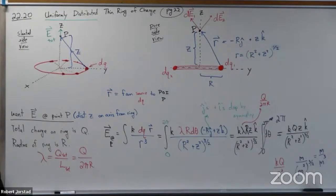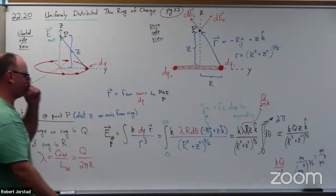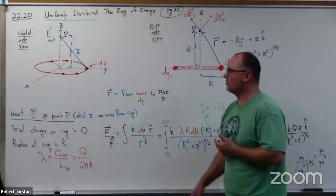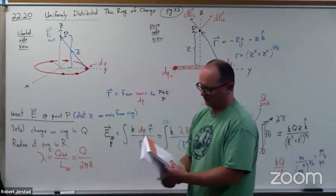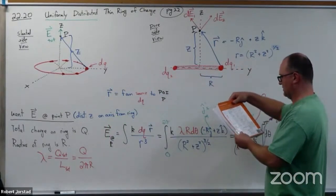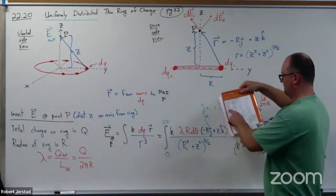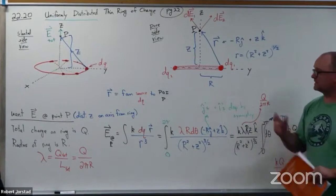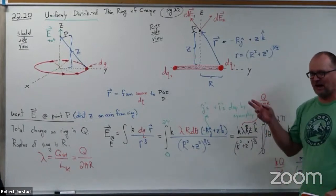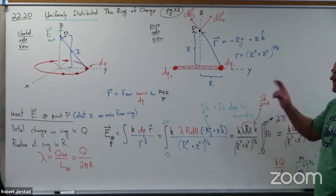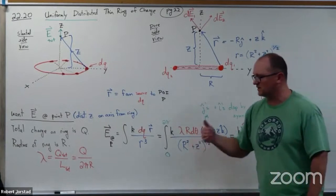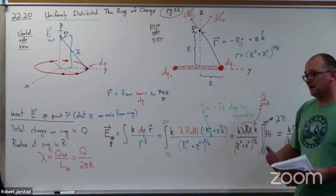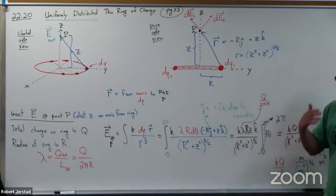The whole point of deriving this is so we can use the result over and over. This formula is so common that it's actually given on your exam equation sheet. This is one of the few formulas I may actually ask you to derive and show your work — so it's a good derivation to practice and know. We can also use this result in other problems. It's fairly easy in the real world to create a ring of charge and use it to exert forces.